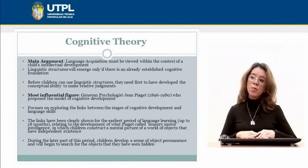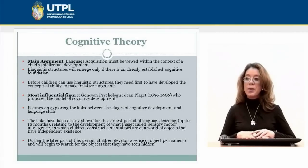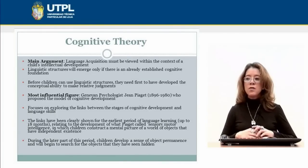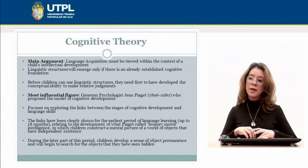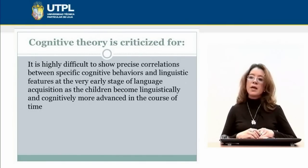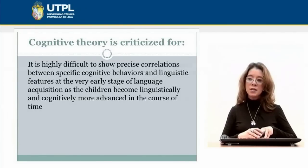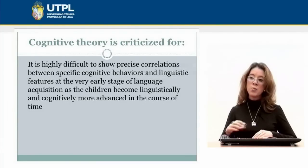We are going to review the cognitive theory, which is the third theory. The main argument of this cognitive theory is that language acquisition must be viewed within the context of a child's intellectual development, and that children need first to have developed conceptual ability to make relative adjustments before they can use linguistic structures. The most influential figure of this cognitive theory is Jean Piaget, who proposed a model of cognitive development within which language development is situated. It is highly difficult to show precise correlations between specific cognitive behaviors and linguistic features at the very early stage of language acquisition.